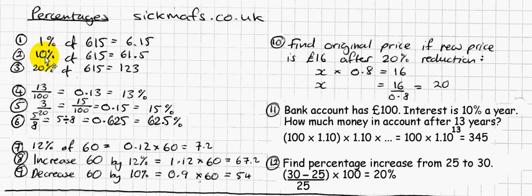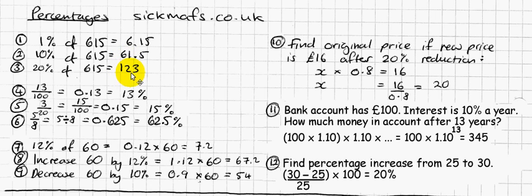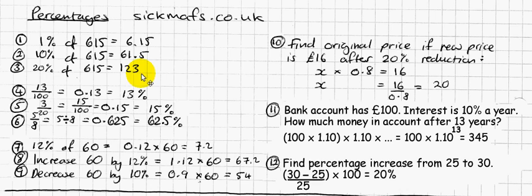Once you know 1% and 10%, you can work out all sorts of percentages. For example, 20%: if I've worked out 10%, which is 61.5 — that's 10% of 615 — then 20% of 615 would be double that, which is 123. And I can work out 21% — I've worked out 20%, so I add 6.15 on top of that, which is 129.15.